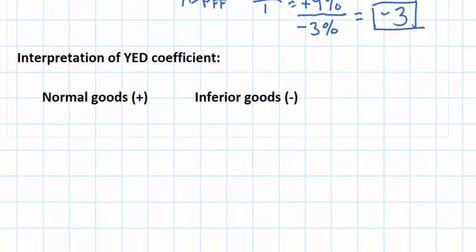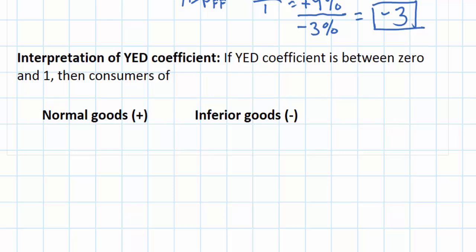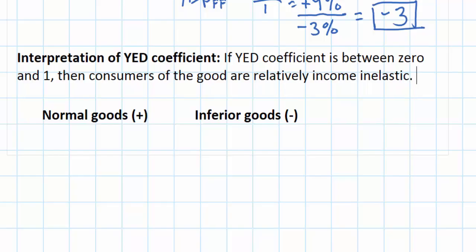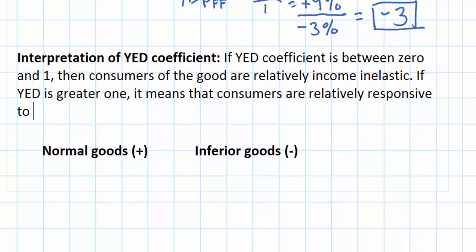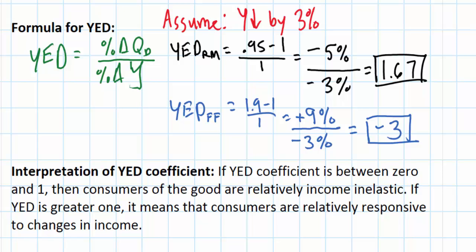What do the absolute values of the YED coefficient tell us? The same things they do for all other types of elasticity. If the YED coefficient is between 0 and 1, consumers are relatively income inelastic. If YED is greater than 1, consumers are relatively responsive to changes in income. In our examples, for every 1% decrease in income, demand for restaurant meals fell by 1.67%, and demand for fast food meals rose by 3%. So the YED coefficient tells us the ratio of the percent change in demand for a good over the percent change in consumers' income.